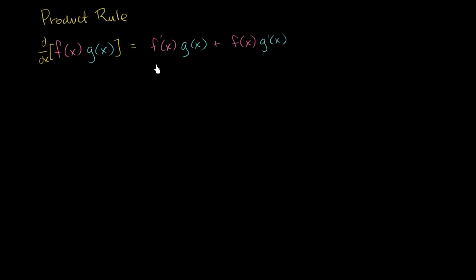Now let's see if we can actually apply this to find the derivative of something. Let's say we're dealing with x squared times sine of x. And we are curious about taking the derivative of this. Well, we might immediately recognize that this can be expressed as a product of two functions.